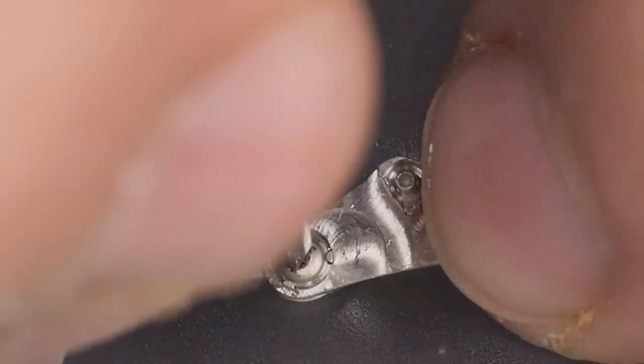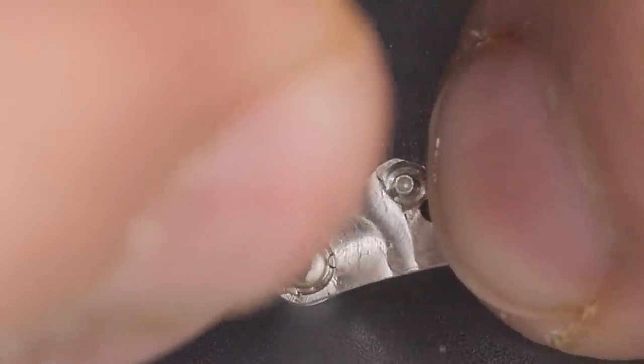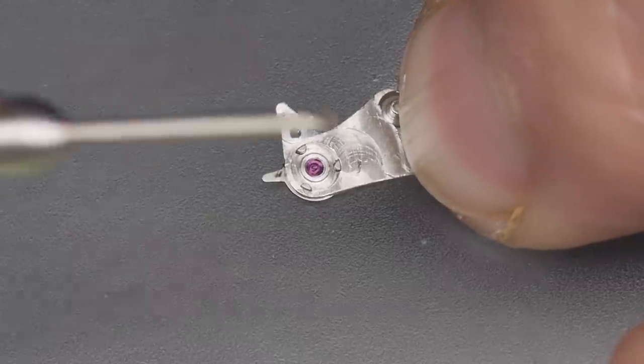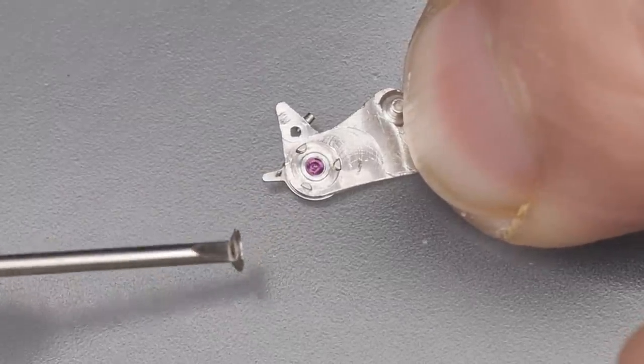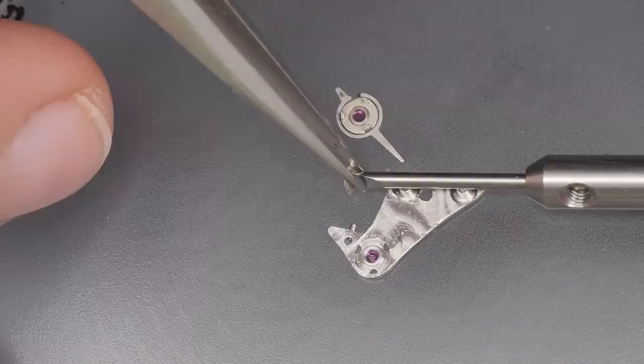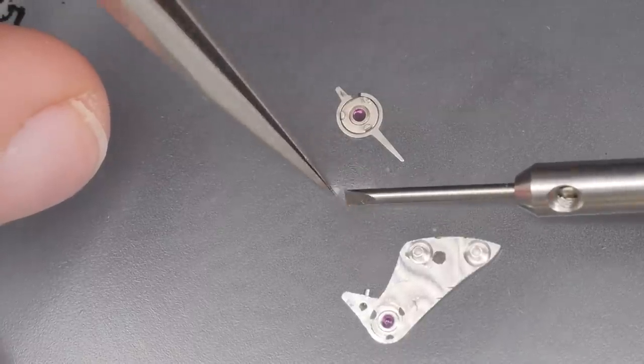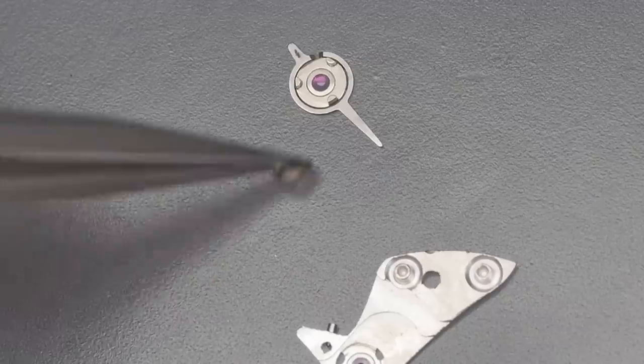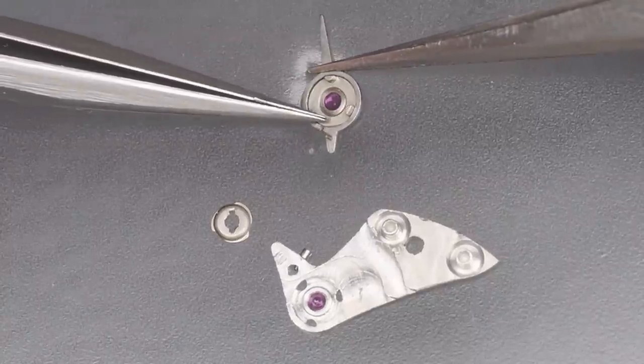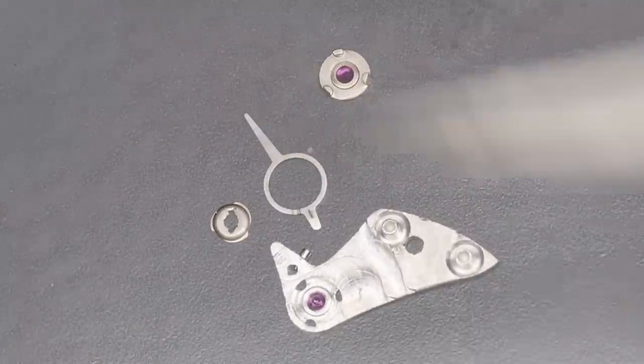Now I can work on disassembling the balance cock. I start by loosening the upper endstone cap retaining cam. Say that five times fast. This cam has three ramp type structures that pull the three arms of the upper endstone cap, securing both to the balance cock. To remove the cam, I just need to turn it a few degrees. And there it is, stuck to the end of my screwdriver. This is what I call a boing. With the cam removed, I separate the endstone cap from the regulator arm.